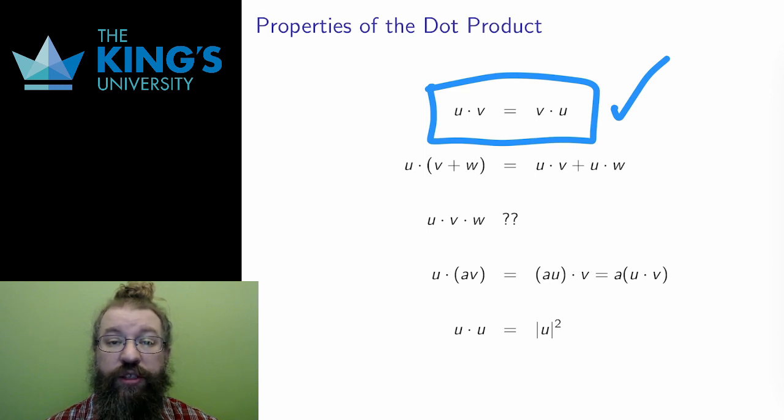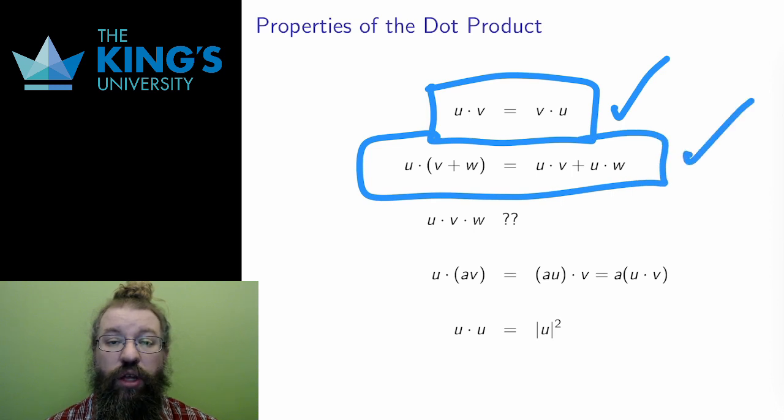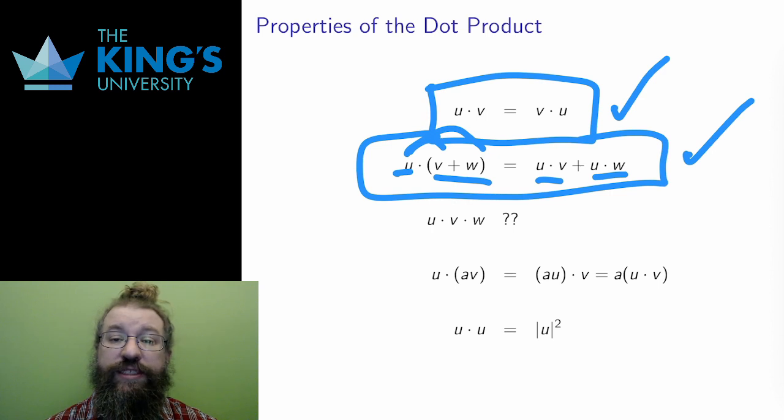Second, the dot product is distributive over vector addition. If I take the dot product with the addition of two vectors, it really looks like a multiplication. This distributes into u dot v and u dot w. This is one of the reasons that it makes sense to call this operation a product. So, it is commutative and distributive with the only addition, vector addition, that makes sense for it to be distributive with.